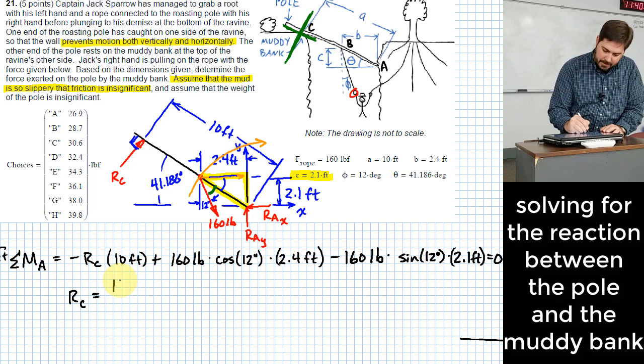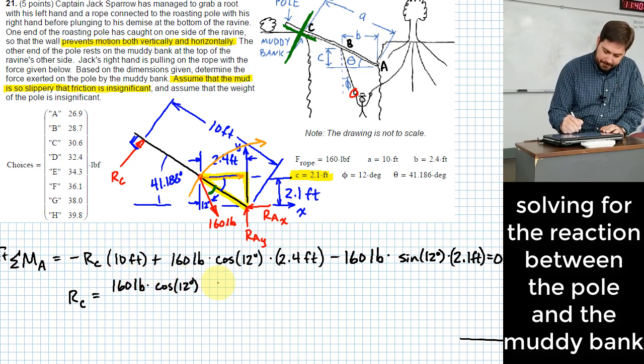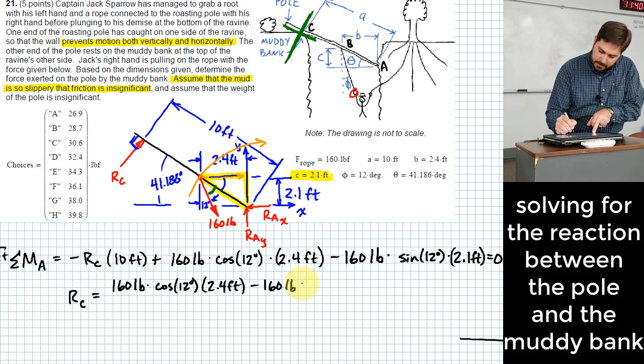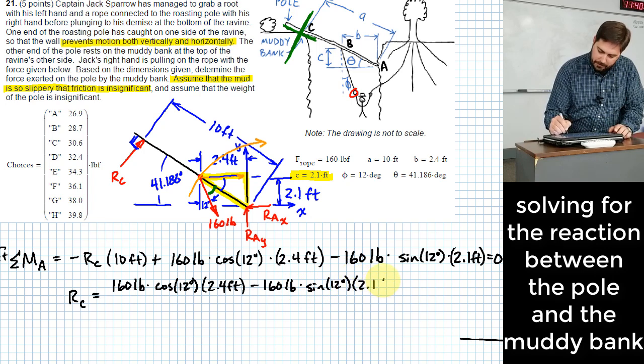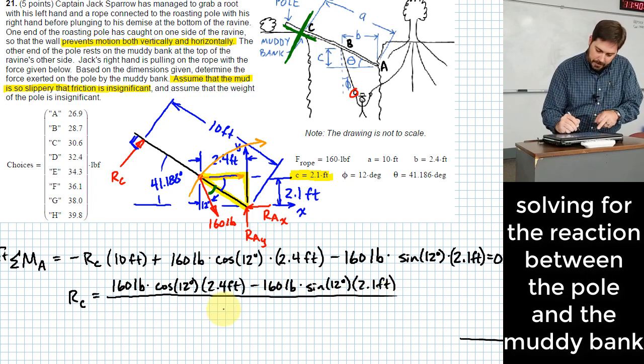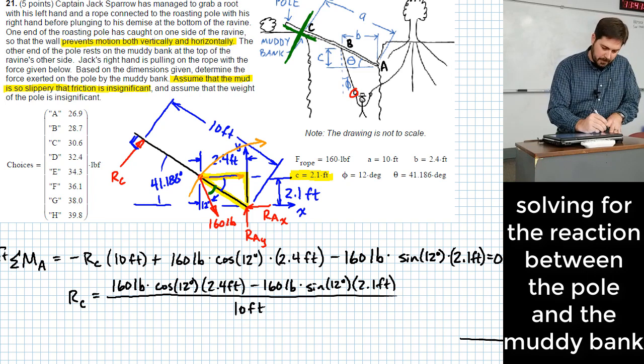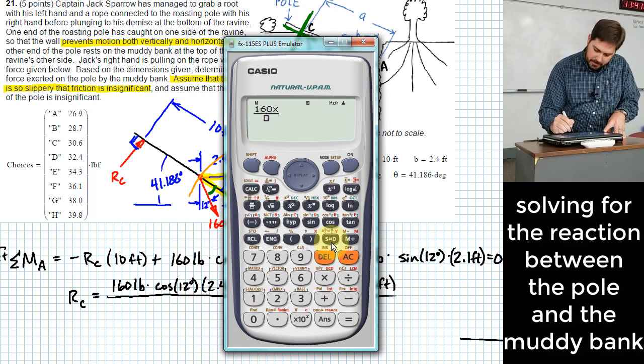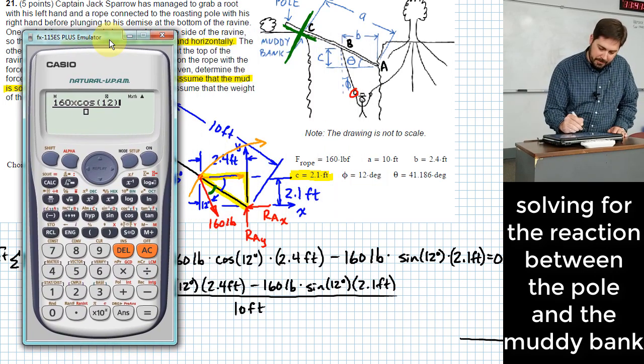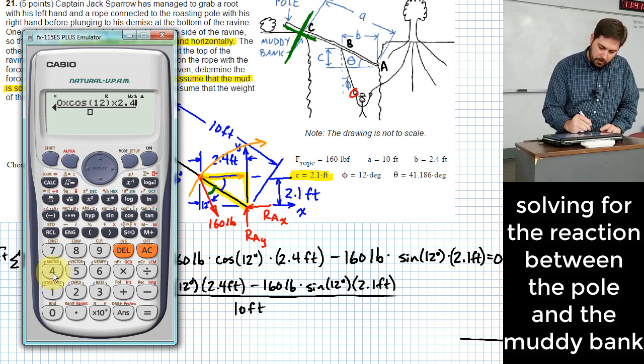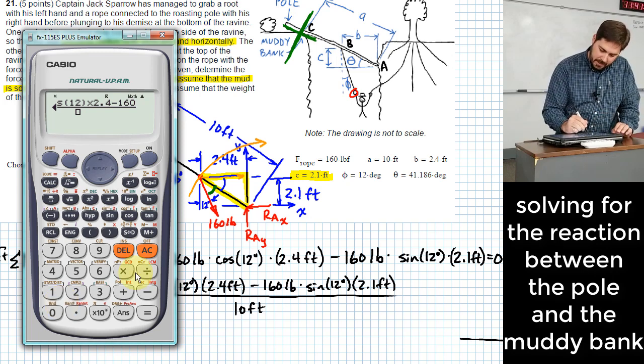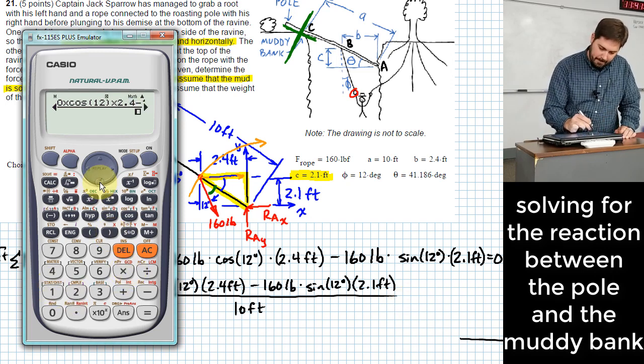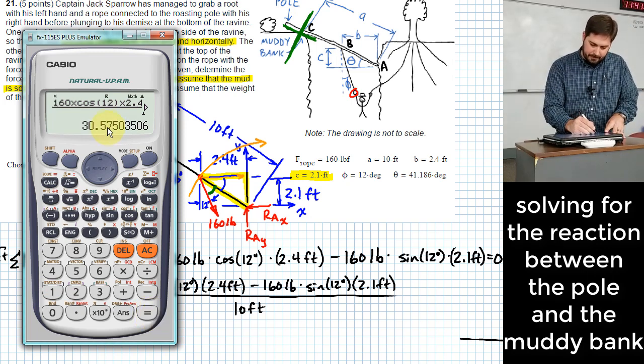We get RC by itself. Basically what that would look like is 160 pounds times the cosine of 12 degrees times 2.4 feet. Minus 160 pounds times a sine, 12 degrees times 2.1 feet. All this over 10 feet. So we can punch that in to the calculator. 160 times cosine 12. Make sure you're in degrees, by the way, or always check your angle units. It's a good piece of advice. So 2.4 feet minus 160 times sine, 12 degrees, times 2.1, and divide all this by 10. 30.58 or so.